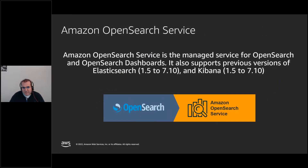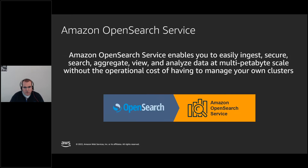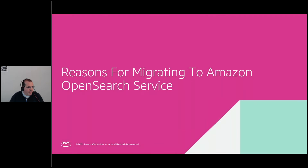Amazon OpenSearch Service is the managed service for the OpenSearch community project — this is what customers are buying from Amazon. The managed service includes the OpenSearch project and OpenSearch Dashboards, and also supports previous versions of Elasticsearch and Kibana. It enables you to easily ingest, secure, aggregate, view, and analyze data at multi-petabyte scale without the operational cost of managing your own clusters. You can scale up to three petabytes and 200 nodes in a single cluster, with cross-cluster capabilities if you need more.